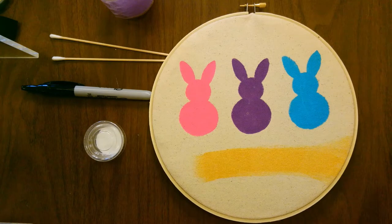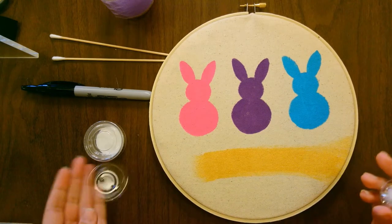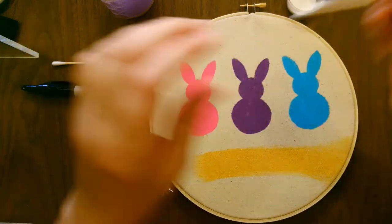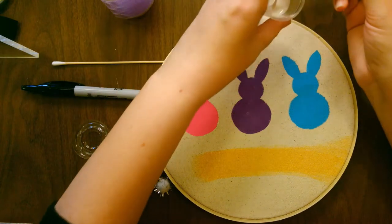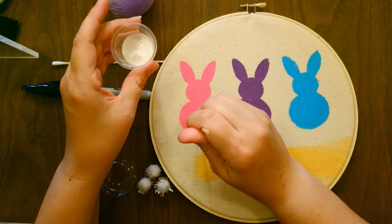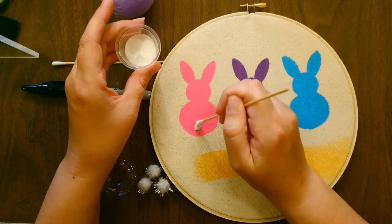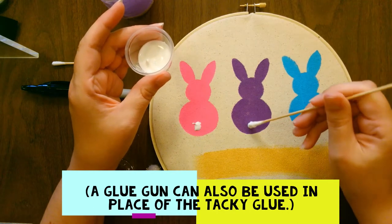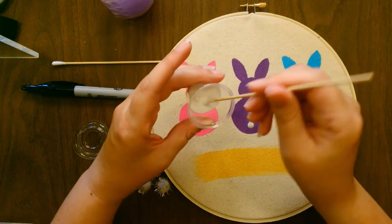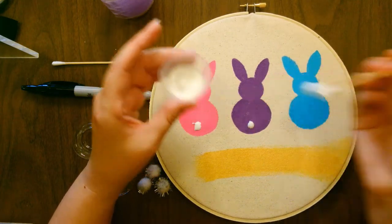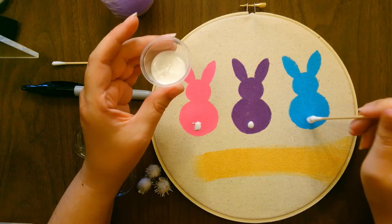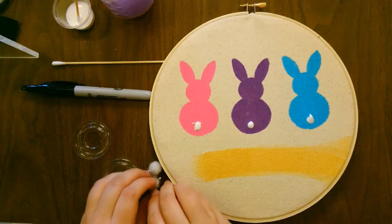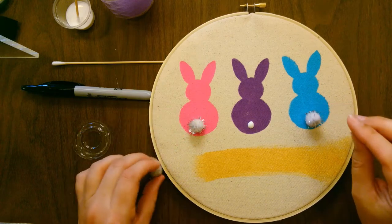Okay, the next part is going to require your glue and your pom-poms. Going to open your glue, put a little dot on each of the bunnies in the center near the bottom but not all the way at the bottom. And then put a pom-pom on each one.